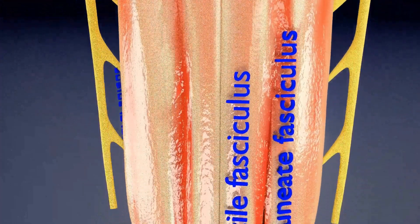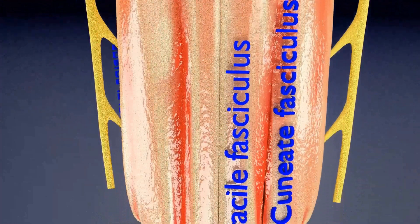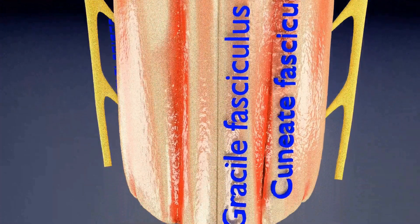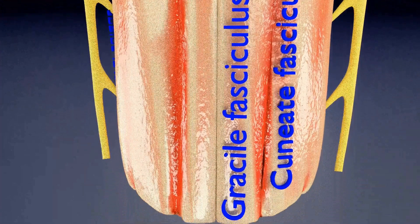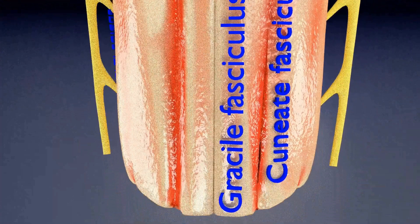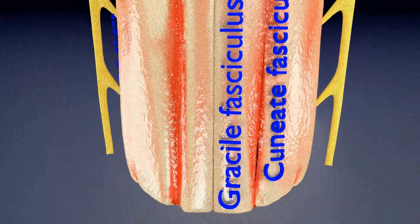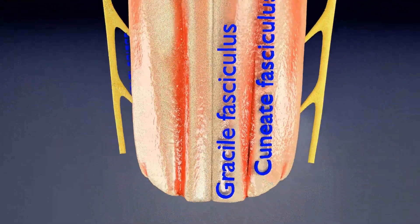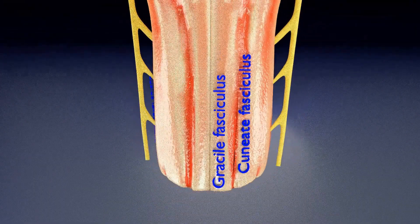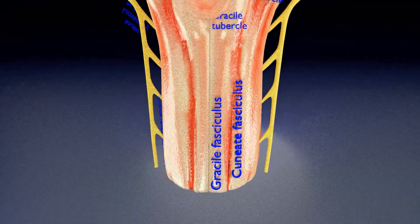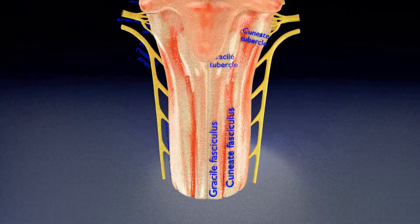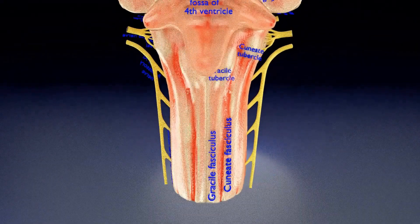The sulcus visible in the middle of the dorsal surface of the medulla oblongata is called the dorsal median sulcus, which is continuous with the posterior spinal sulcus. On each side there are two vertical prominences running parallel to the sulcus, the medial one formed by the gracile fasciculus ascending from the spinal cord.